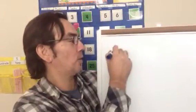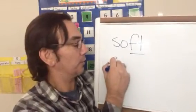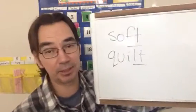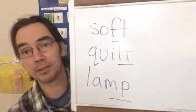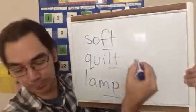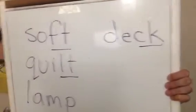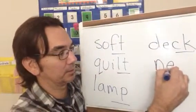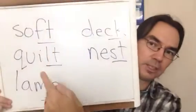Other blends that we are going to talk about also appear at the end of words. Watch this: 'soft' — the FT at the end is the blend we're talking about. We also have 'quilt' — the LT is another blend. We have 'lamp' — and the MP is a blend. Also 'deck' — the CK is a blend. And 'nest' — the ST there is a blend. So we're looking for FT, LT, MP, ST, and CK.